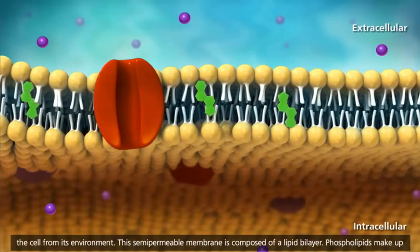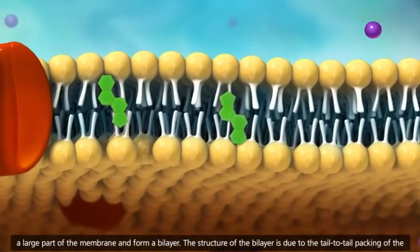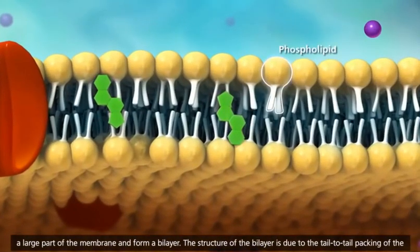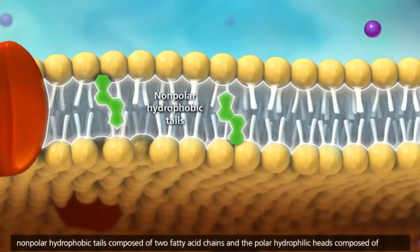This semi-permeable membrane is composed of a lipid bilayer. Phospholipids make up a large part of the membrane and form a bilayer. The structure of the bilayer is due to the tail-to-tail packing of the nonpolar hydrophobic tails.